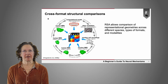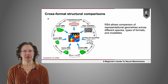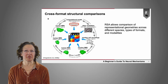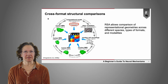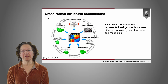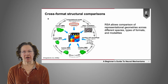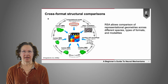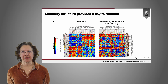One of the beauties of RSA is it allows cross-format structural comparisons. You can compare brain activity to a computational model, to results from other brain areas, to neuroimaging studies of other animals, or to results from single-cell recording methods. By doing so, you try to extract the structure of the representations from your data, and the structural similarity provides a key to the function.